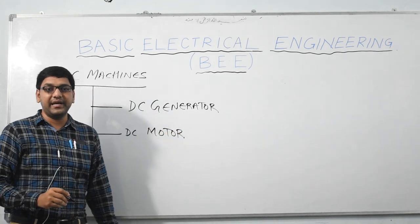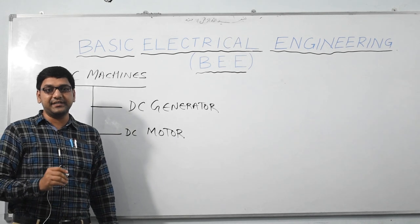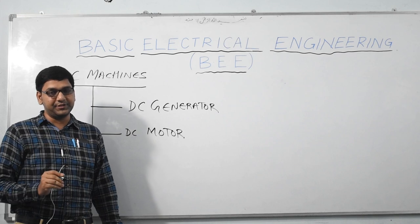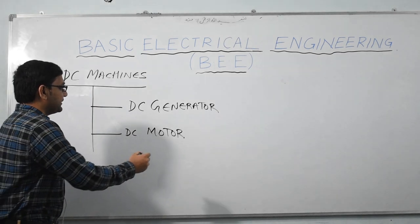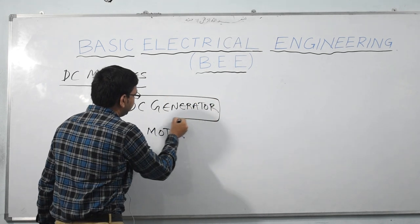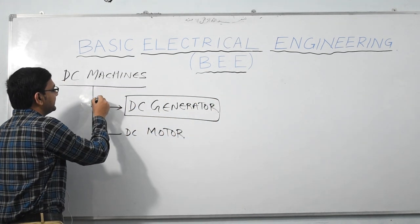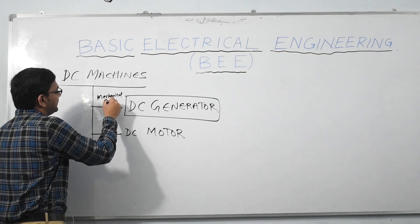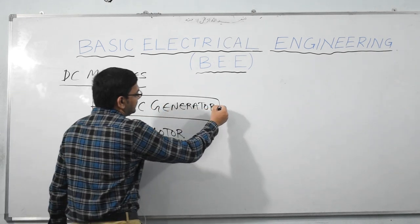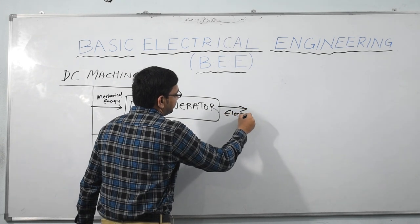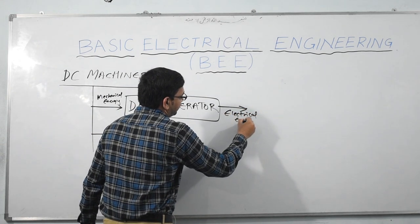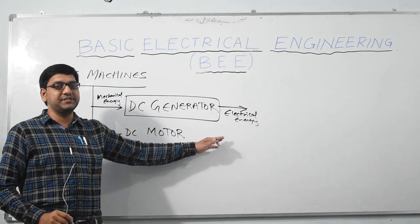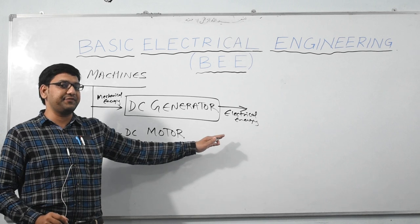In electrical engineering, every machine — whether it is a generator or a motor — has one particular input and one particular output. The input to the DC generator is mechanical energy, and the output of this DC generator is electrical energy, that is, the voltage produced by the generator.